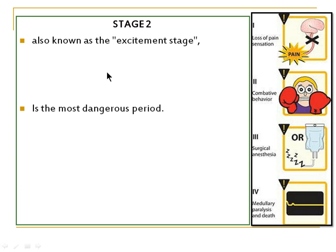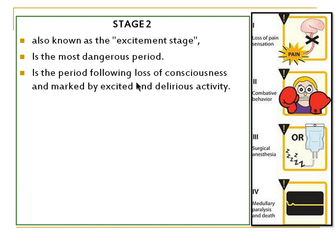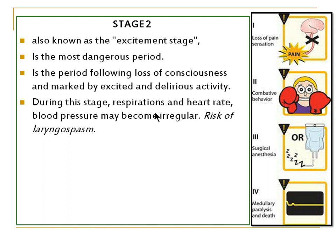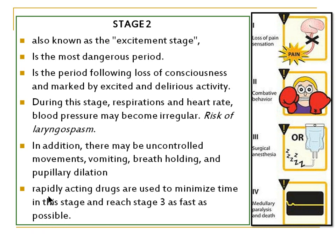Stage 2 is also known as the excitement stage and is the most dangerous period in anaesthesia because the body shows combative behavior. It is the period following loss of consciousness, marked by excited and delirious activity. During this stage, respiration, heart rate, and blood pressure become irregular. There is risk of laryngospasm, uncontrolled movement, vomiting, breath holding, and pupillary dilation.